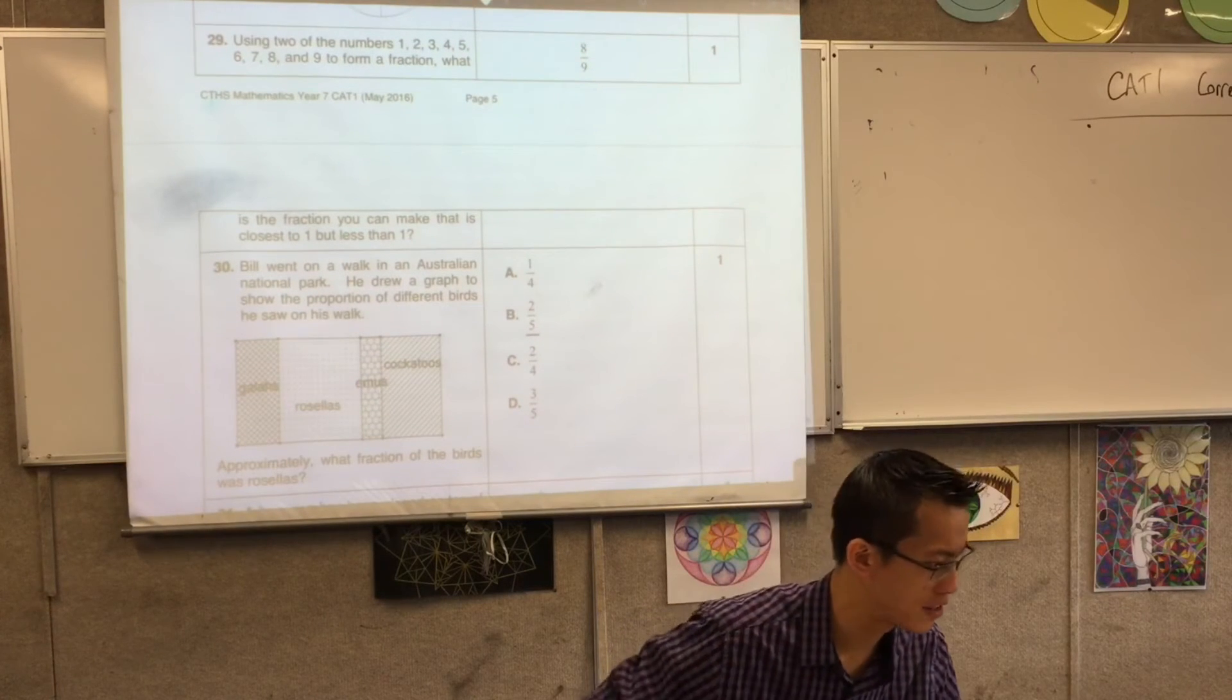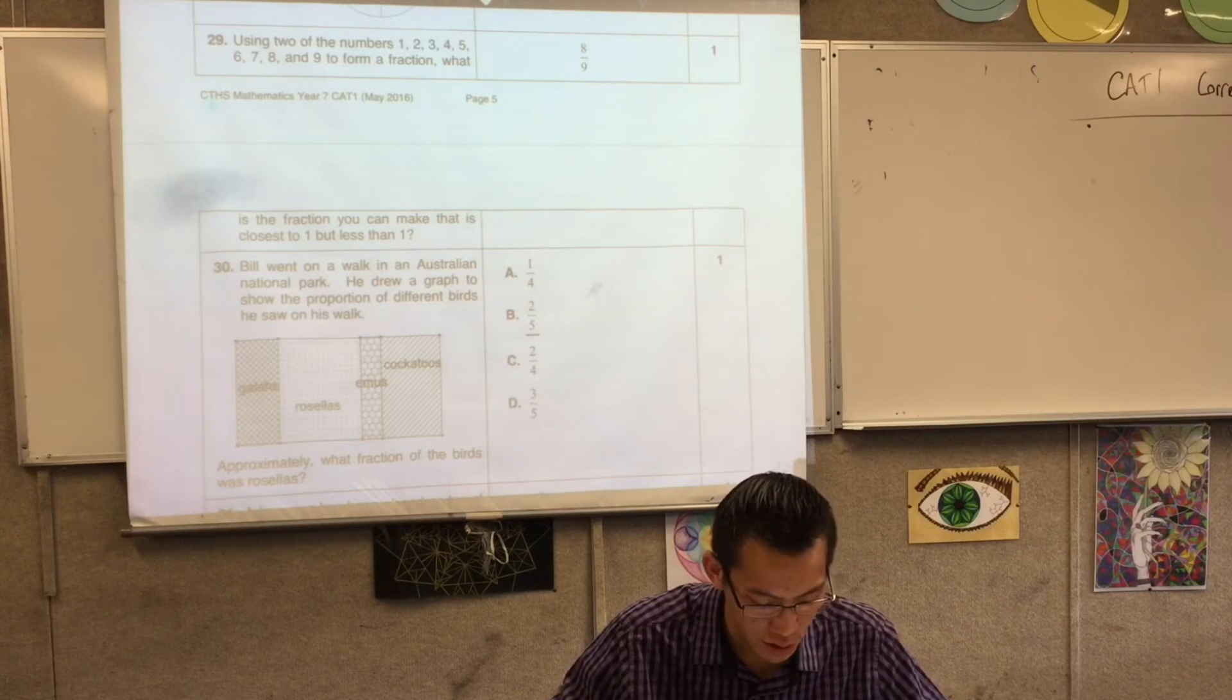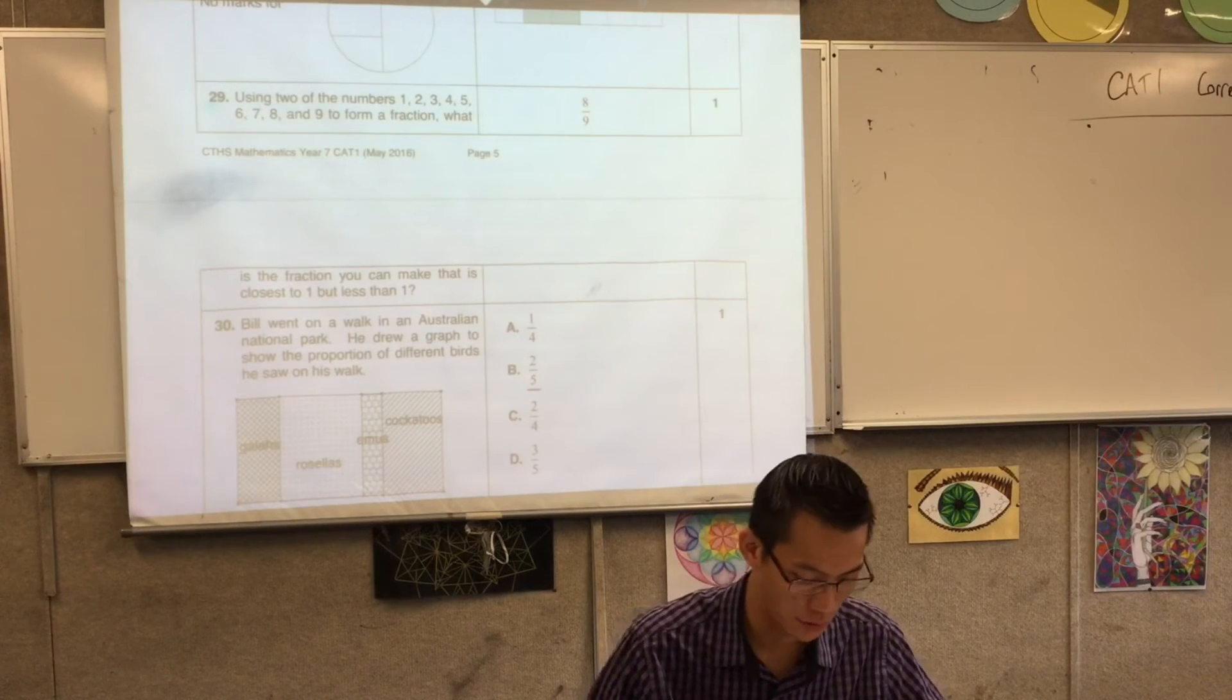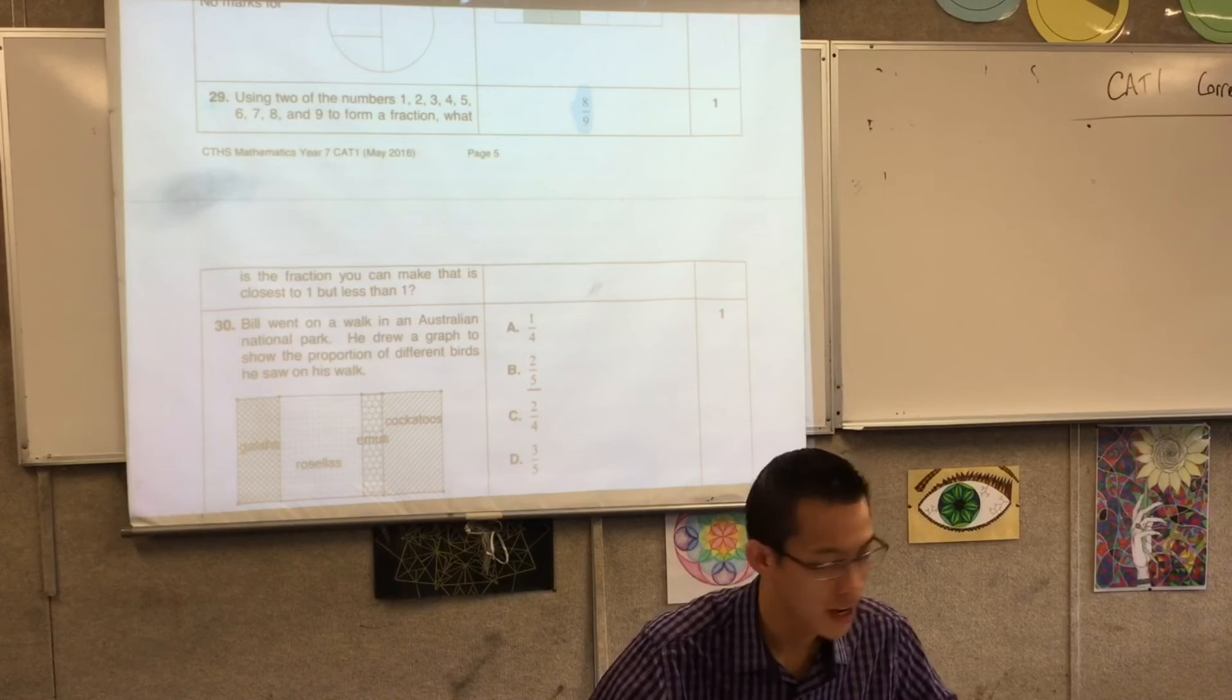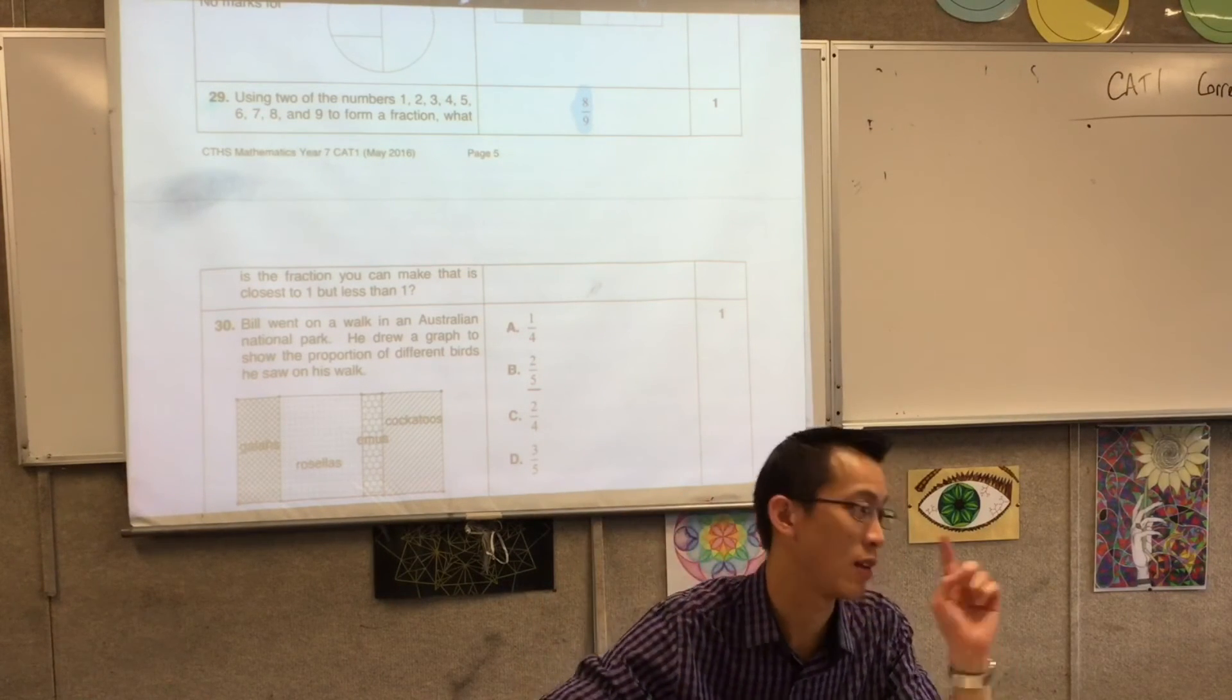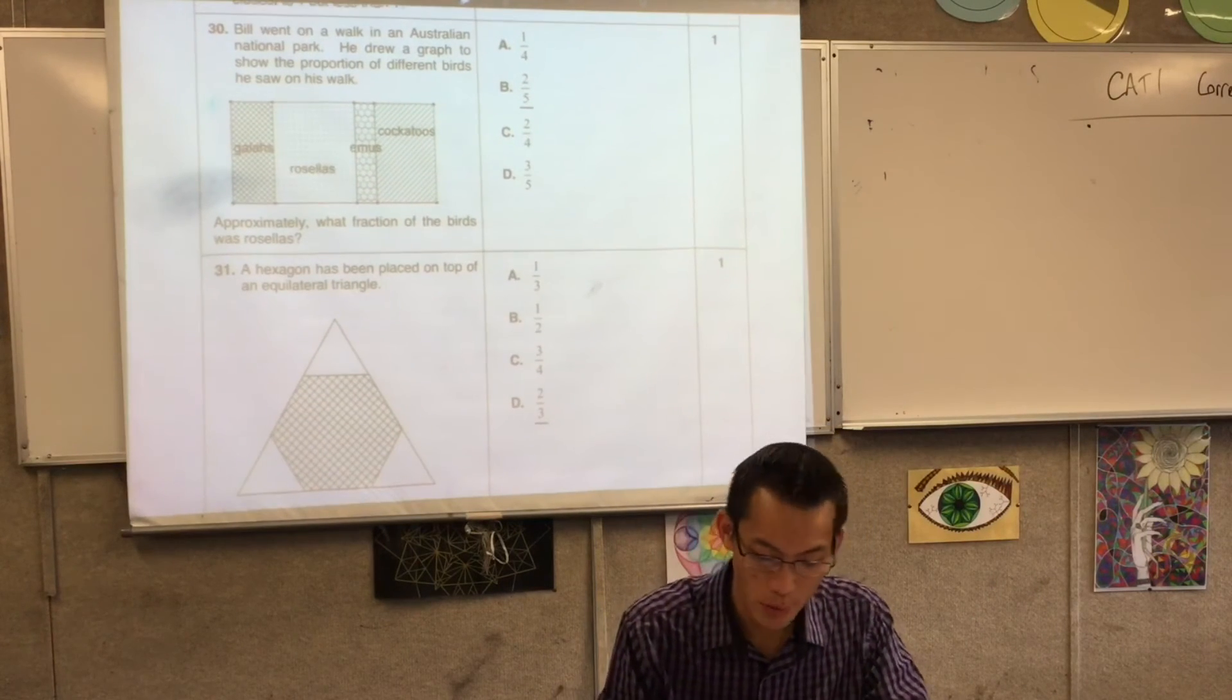Using two of the numbers, form a fraction that's close to one but less than one. You've got lots of different options, but you're really trying to get as close as possible. You want the biggest numbers possible. If you had a half or three quarters, all those kinds of things, there's gonna be a bigger gap between you and one.